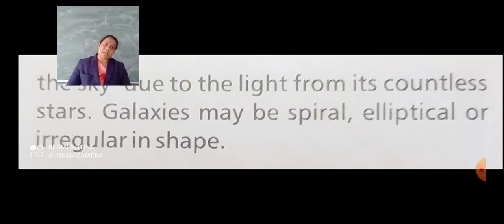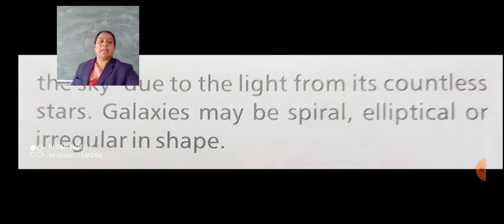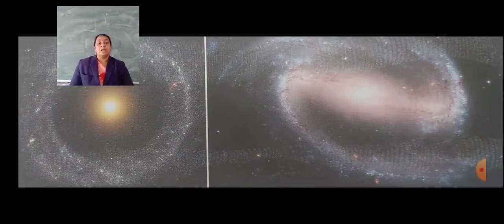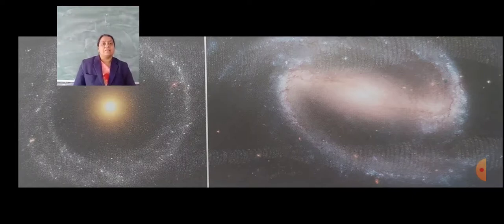Galaxies may be spiral, elliptical, or irregular in shape. Our sun is part of a spiral galaxy called the Milky Way, and we belong to the Milky Way galaxy. Here are some examples of galaxies — by looking at them you can identify which one is the spiral galaxy and which one is the elliptical galaxy.